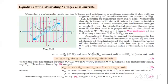Equations of alternating voltage and current: Consider a rectangular coil having N number of turns and rotating in a uniform magnetic field with an angular velocity of omega radians per second.